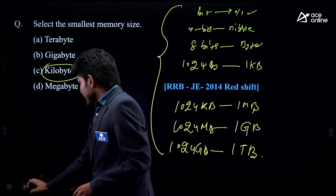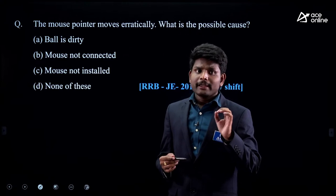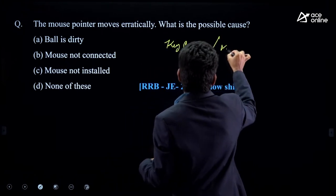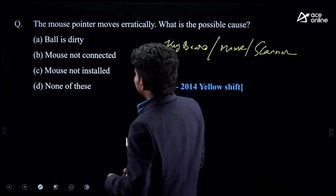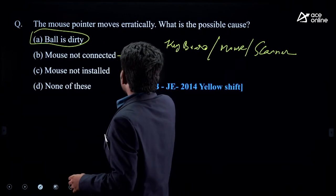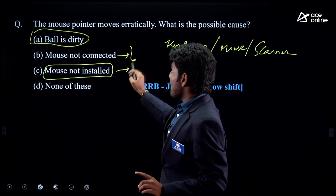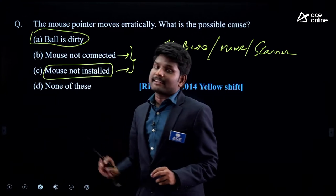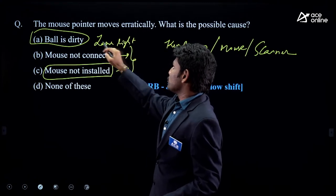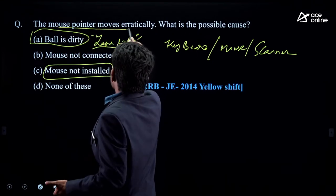Next question: 'The mouse pointer moves erratically.' If you see the topic is related to hardware, they may ask questions related to keyboard, mouse, scanner, etc. If the mouse pointer moves erratically, the possible cause is that the ball is dirty. If the mouse is not connected, the cursor will not be displayed at all.